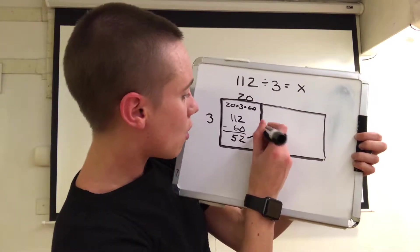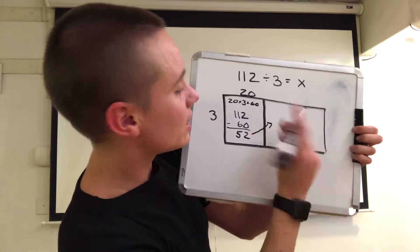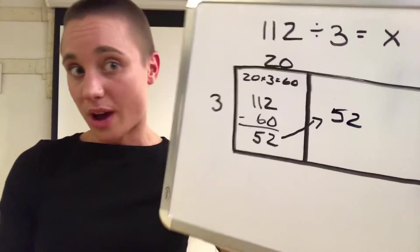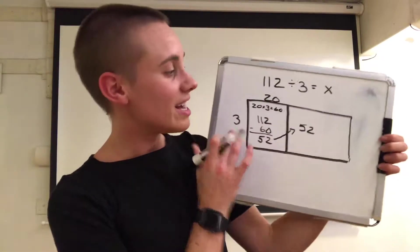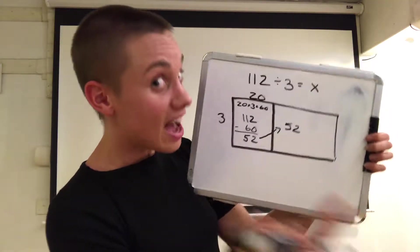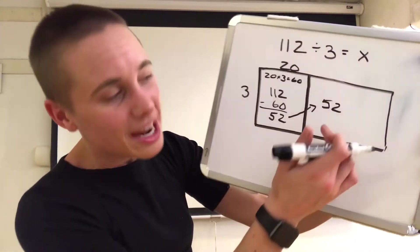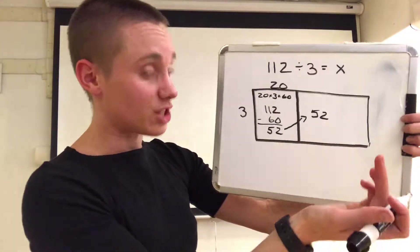I'm going to bring over my leftovers to this remaining area over here and ask myself the same question: what is a multiple of 3 that is close to but not more than 52? I can't use 60 again because 60 is more than 52.